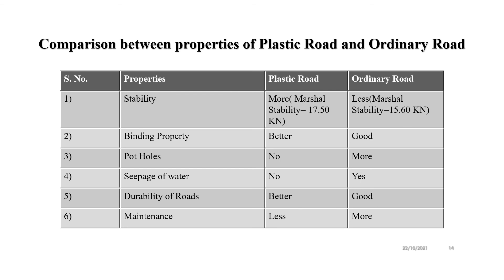Here is a comparison between the properties of plastic roads and ordinary roads. As you can see from the chart, the stability for plastic roads is more — the Marshall Stability value is 17.50 kN, whereas for ordinary roads it is 15.60 kN. Plastic roads also have better binding property, fewer potholes, no seepage water, greater durability, and maintenance costs are very low compared to ordinary roads.